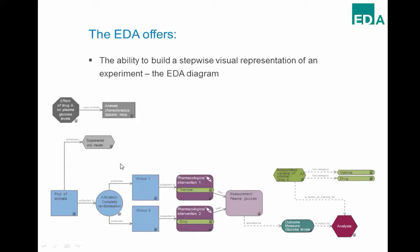If you think of blinding, for example, in a text description the best you get is 'the experiment was done blind,' with no idea who was blinded to what. In the EDA diagram, you get the blinding status in the properties of the allocation, measurement, and analysis nodes, so for each step you know exactly who is blind to what. This granularity is important because you might not be able to blind every step — for instance, if you're working with lean and obese rats, you can't blind the measurement step, but there's no reason you shouldn't blind the analysis stage.